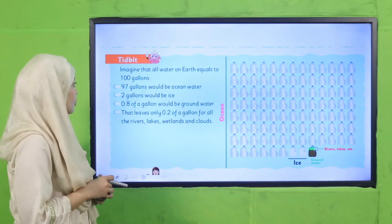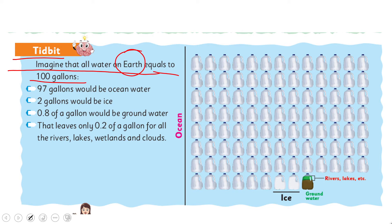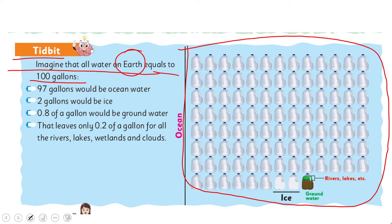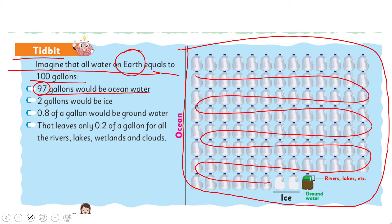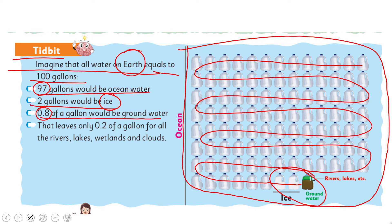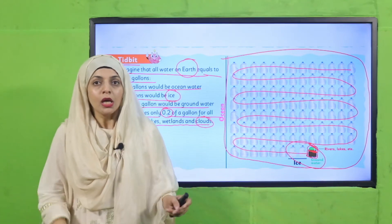Here is a tidbit: imagine all the water on earth equals 200 gallons. 97 gallons would be ocean water, which cannot be used for drinking. Two gallons would be ice. 0.8 of a gallon would be ground water, and only 0.2 of a gallon is left for all the rivers, lakes, wetlands, and clouds. So only that tiny amount is available for us — will you waste even that?